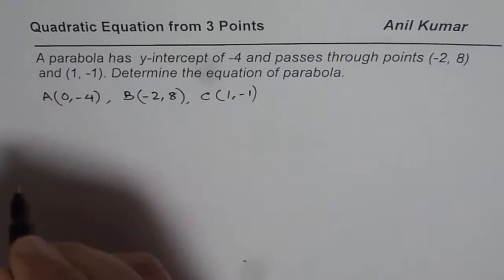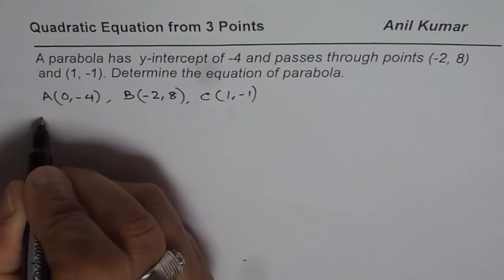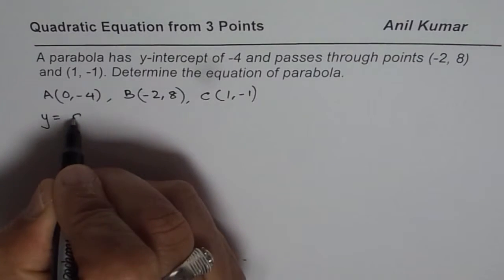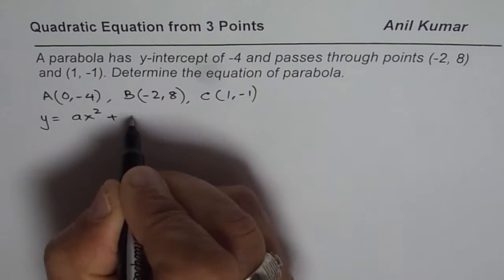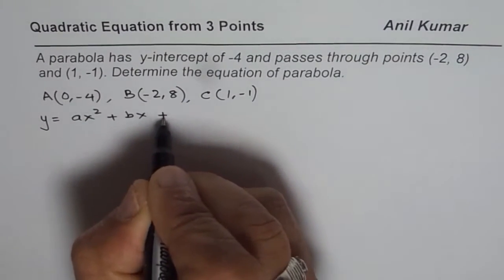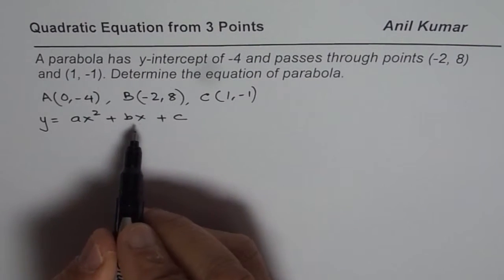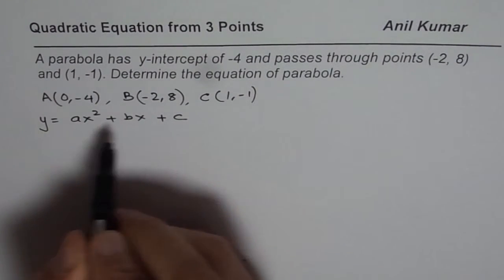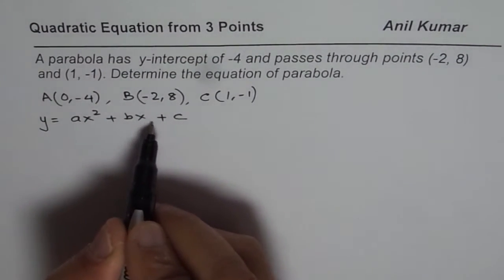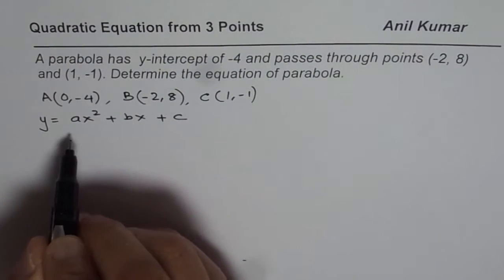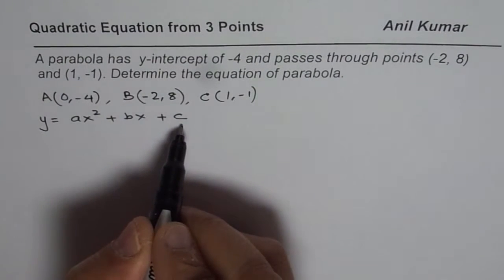The general form of a parabola or quadratic equation is y equals Ax squared plus Bx plus C. We have a quadratic equation with three unknowns, and to find the value of these three unknowns, we need three points.